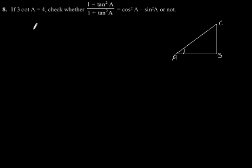Exercise 8.1, question number 8: If 3 cot A is equal to 4, check whether (1 - tan²A) / (1 + tan²A) is equal to cos²A - sin²A or not.